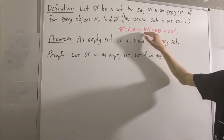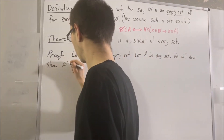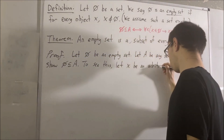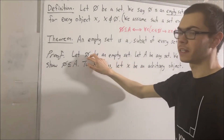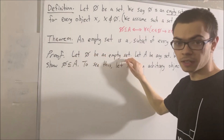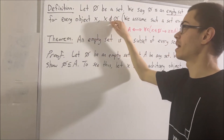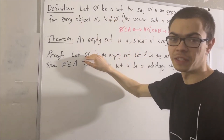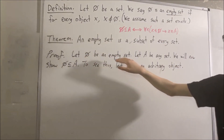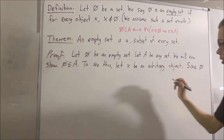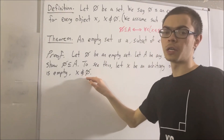So we're trying to prove a statement about all objects x. So give me an arbitrary object x. Now, remember, our set here is an empty set. And by definition of an empty set, what that means is, for every object x, x is not an element of our empty set. So since we have an object x right here, we know that x is not an element of our empty set.